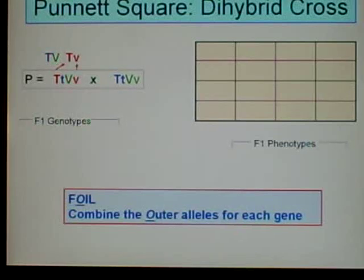The O stands for outer, so combine the outer alleles for each gene. The big T is the outer allele between the two Ts. It's on the outside of the expression. And the little V is the outside V, because it too is on the outside expression.